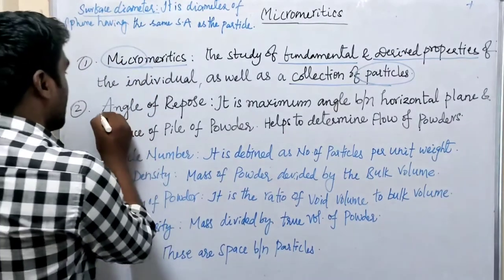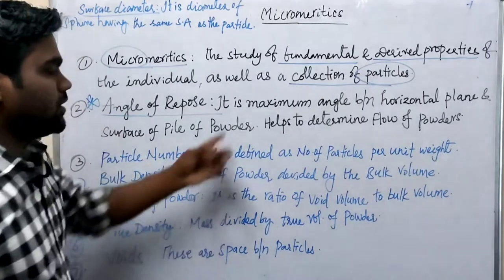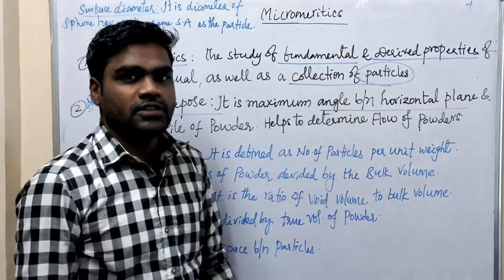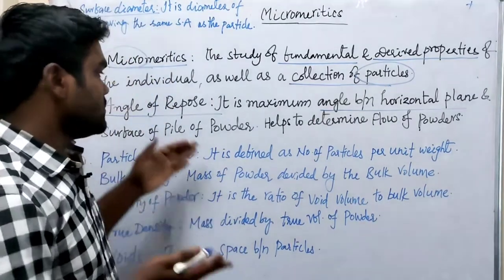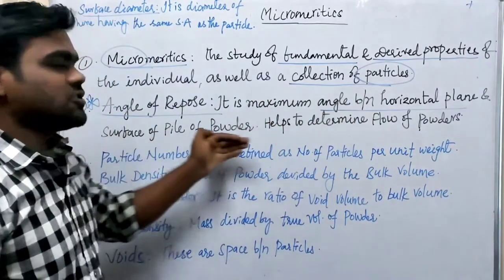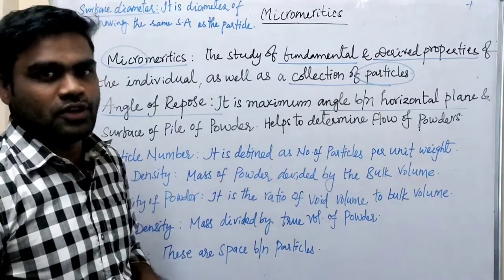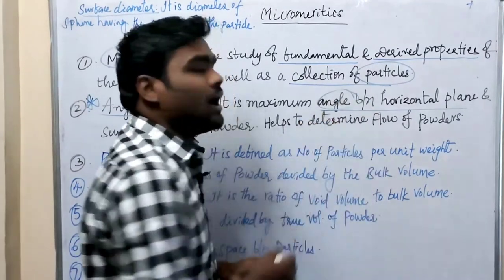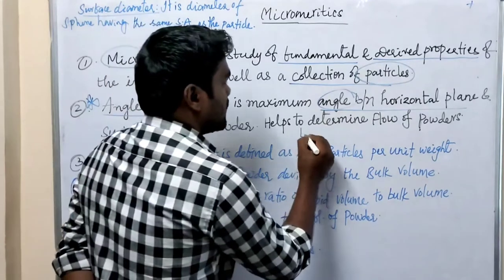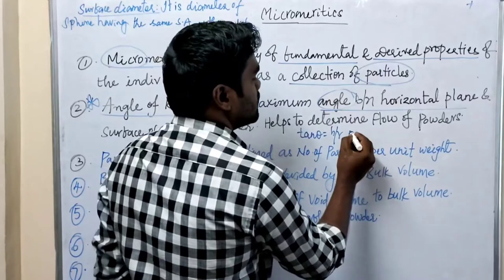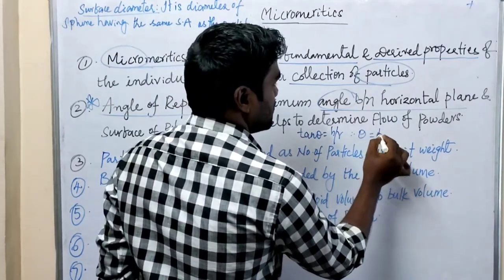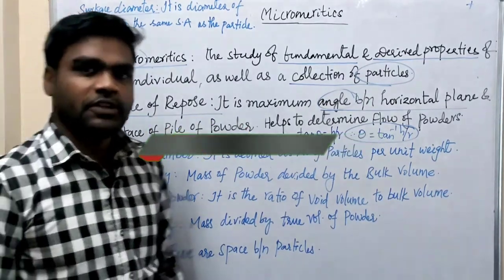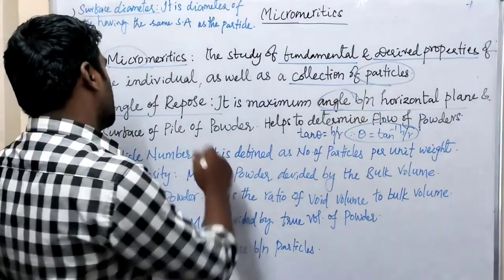Next, angle of repose — very very important. It is the maximum angle between the horizontal plane and the surface of a pile of powder. It helps to determine the flow of powders. The formula to determine the angle of repose is: theta = tan⁻¹(h/r), where h is height and r is radius.